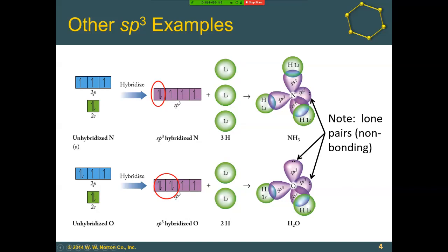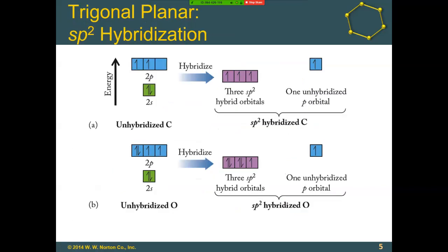When certain orbitals do not hybridize, if we take two p orbitals and one s orbital, we have three orbitals in, giving three orbitals out. This creates three sp2 orbitals, leaving behind one unhybridized p orbital.